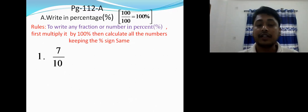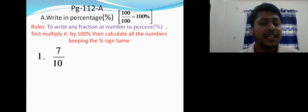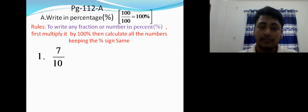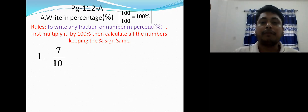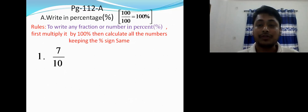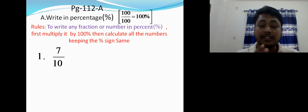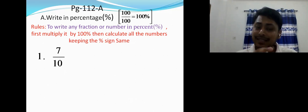For example, 7/10 is given. You learn percentage because your result card shows results in percentage — like 50.5 percent. So how is 7/10 converted into percentage? It is a matter of practical life. Seven out of ten — now you have to find out how many out of hundred.